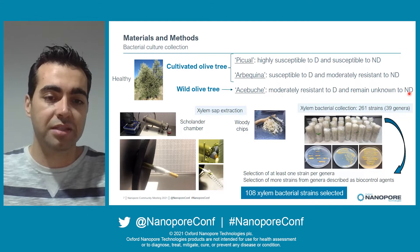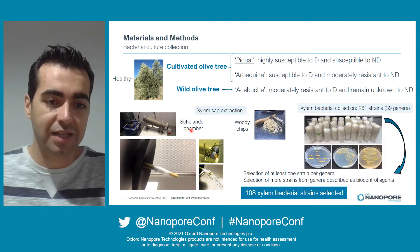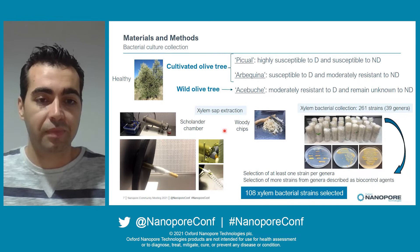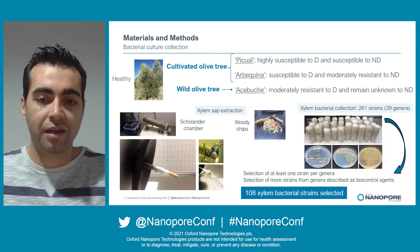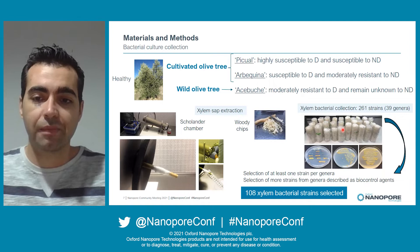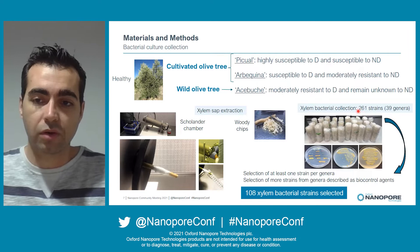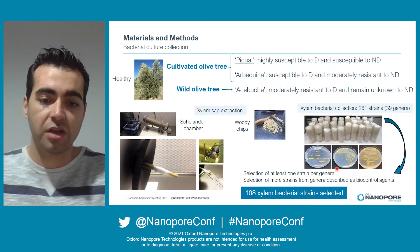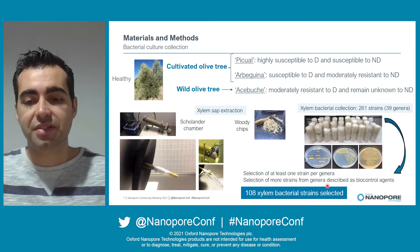After that, we selected branches and followed two different approaches to extract the xylem sap. First, we used a Scholander pressure chamber device, where we put our branches inside and increased the pressure to obtain the xylem sap. On the other hand, we made small woody pieces using a sterile scalpel to obtain woody chips. Both the xylem sap and woody chips were cultured in different culture media, and we obtained a xylem bacterial collection composed of 261 strains grouped in 39 genera. After that, we made a selection of these strains — at least one strain per genus, and more strains per genus described as a biocontrol agent — giving us a total of 108 xylem bacterial strains.